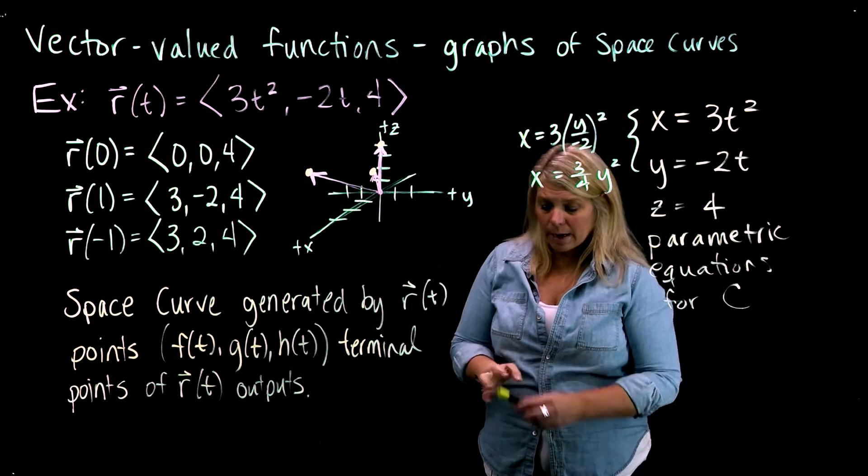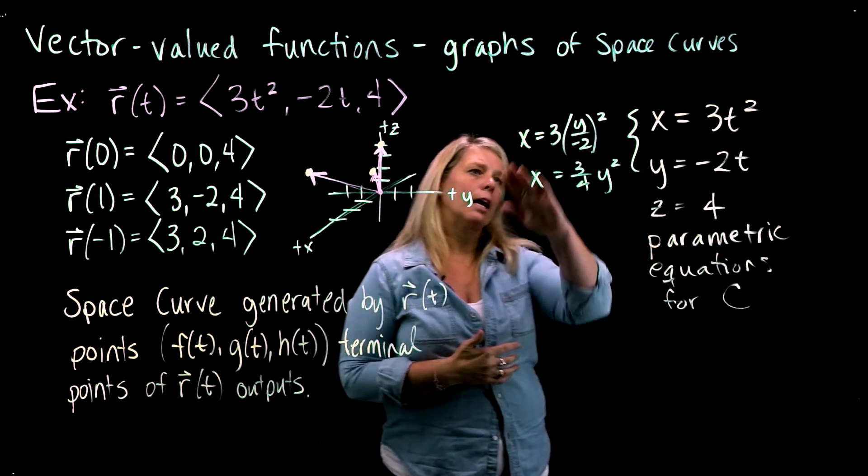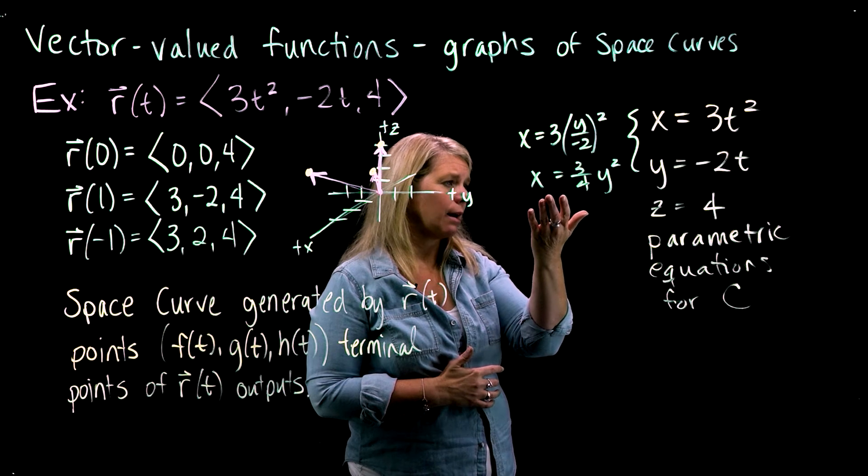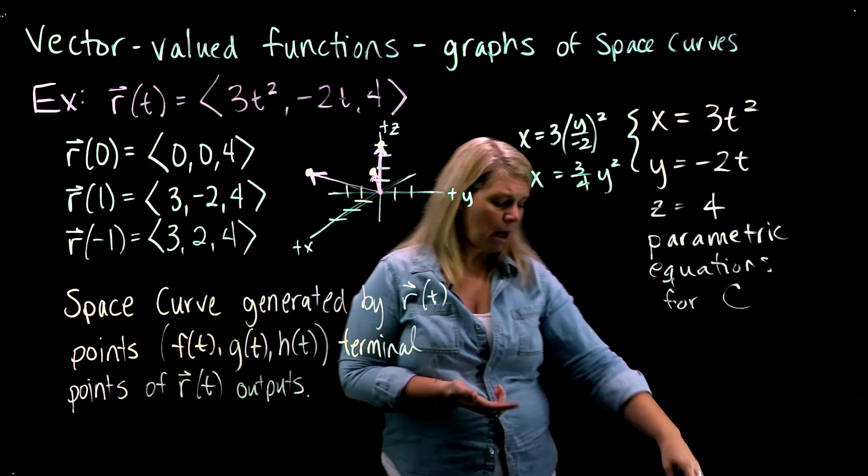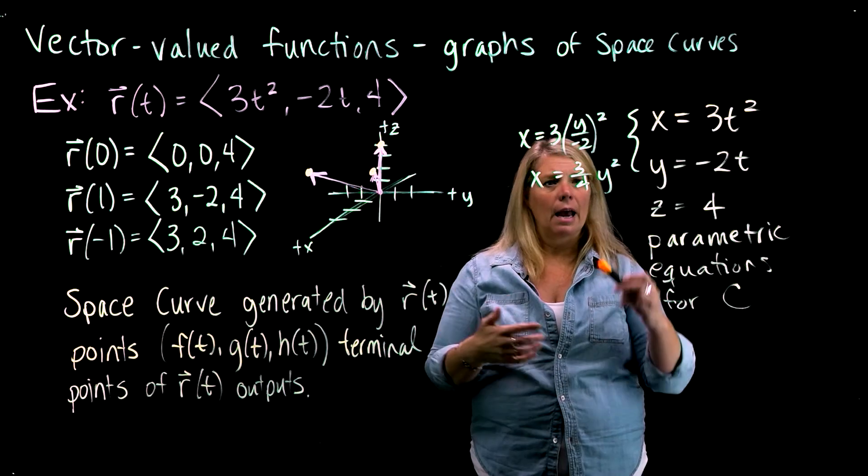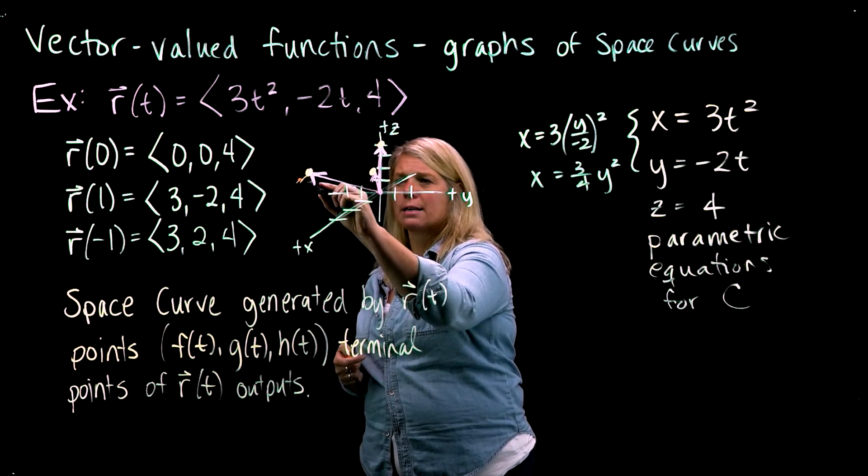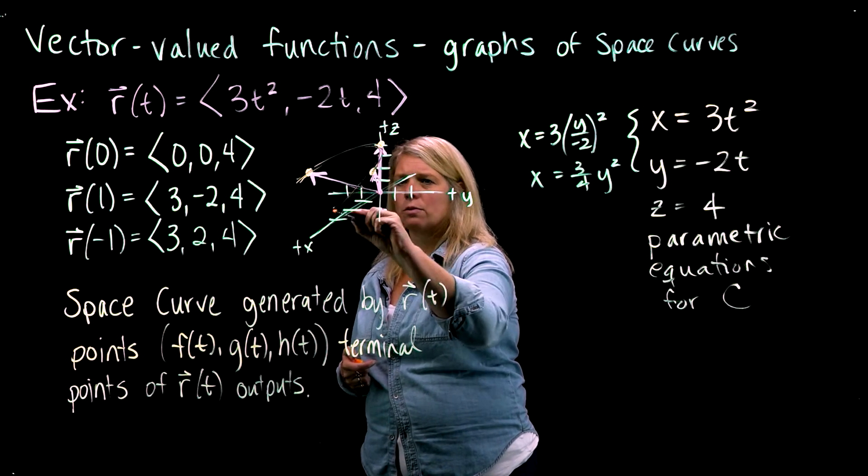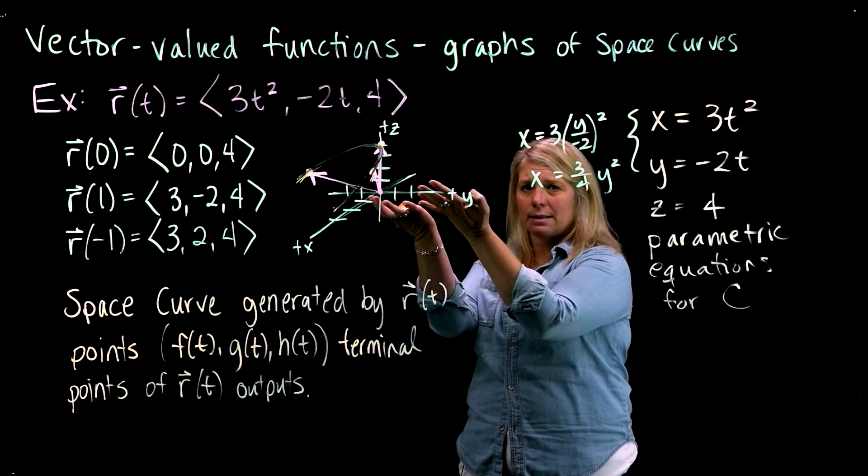So for this one, I can use some points that I've plotted coming from these vectors. I can also use this idea of eliminating the parameter to recognize the geometry that's going on here, using what I know about algebra to recognize that geometry, and then plotting that space curve up here. So these are three points. And if I graph this parabola, x equals 3 fourths y squared up here at a height of 4, we get a parabola that opens sort of like that on the positive x-axis up in a plane at z equals 4.